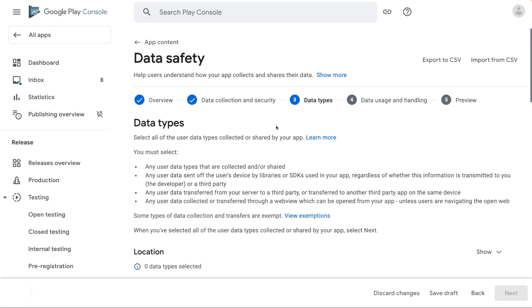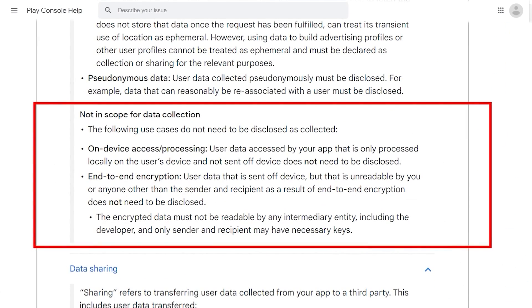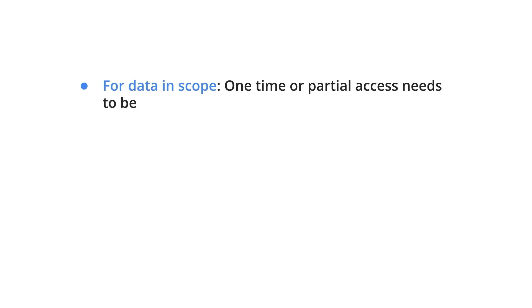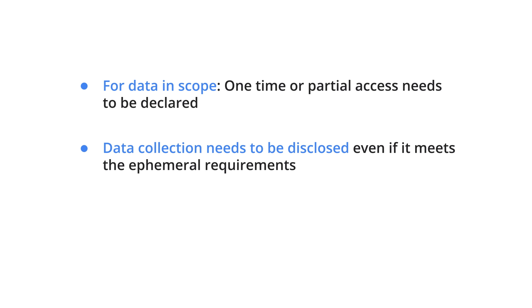Now coming back to the form. Apart from the instructions mentioned here, some important factors to keep in mind: review the Help Center guidance and exemptions. In some cases, there may be applicable collection exemptions such as end-to-end encrypted data, or sharing exemptions such as a service provider. For data in scope, even one-time or partial access needs to be declared. For example, one-time access to photos to upload a file versus monitoring all photos on the device. If data collection meets the ephemeral requirements, you will still need to disclose the collection. However, it will not be shown to users in your app's store listing.